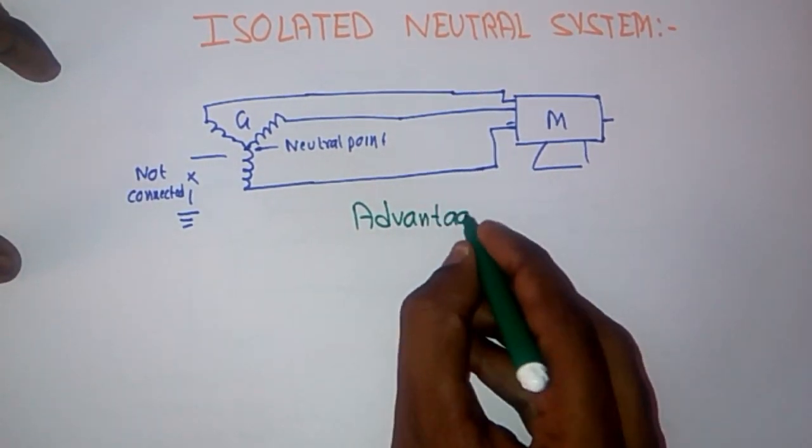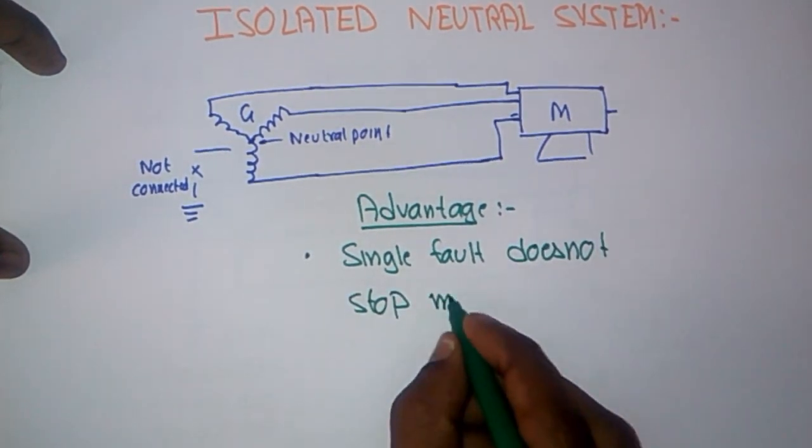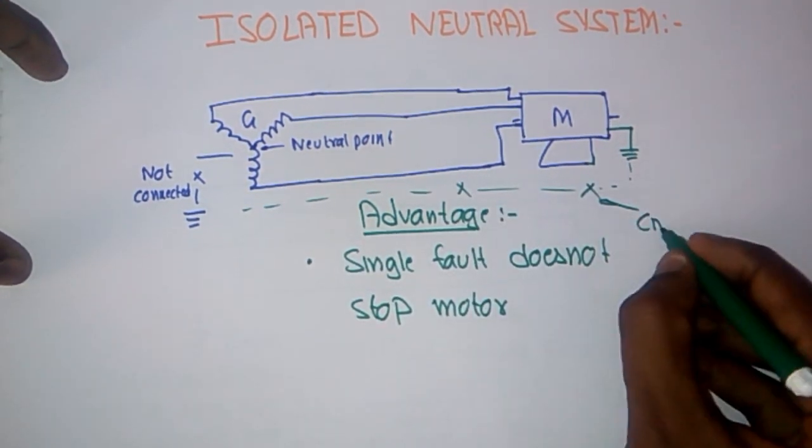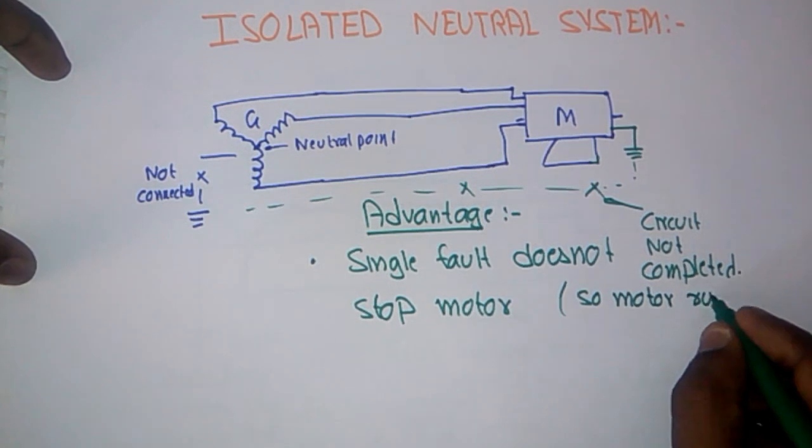The advantage of this system is the single fault will not stop the motor. If the single fault is occurring in the motor, it will not cause the short circuit and the motor will not stop.